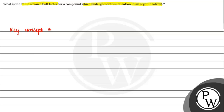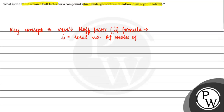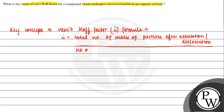Key concept will be Van't Hoff factor I. We represent that formula: I is equal to total moles of particles after association divided by number of moles of particles before association or dissociation.